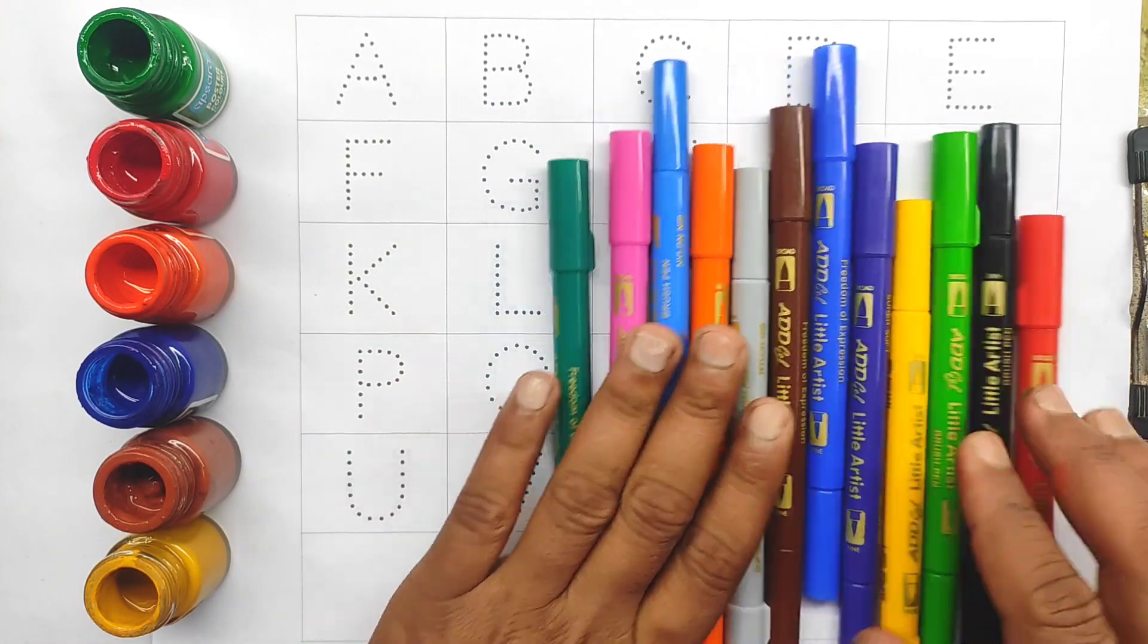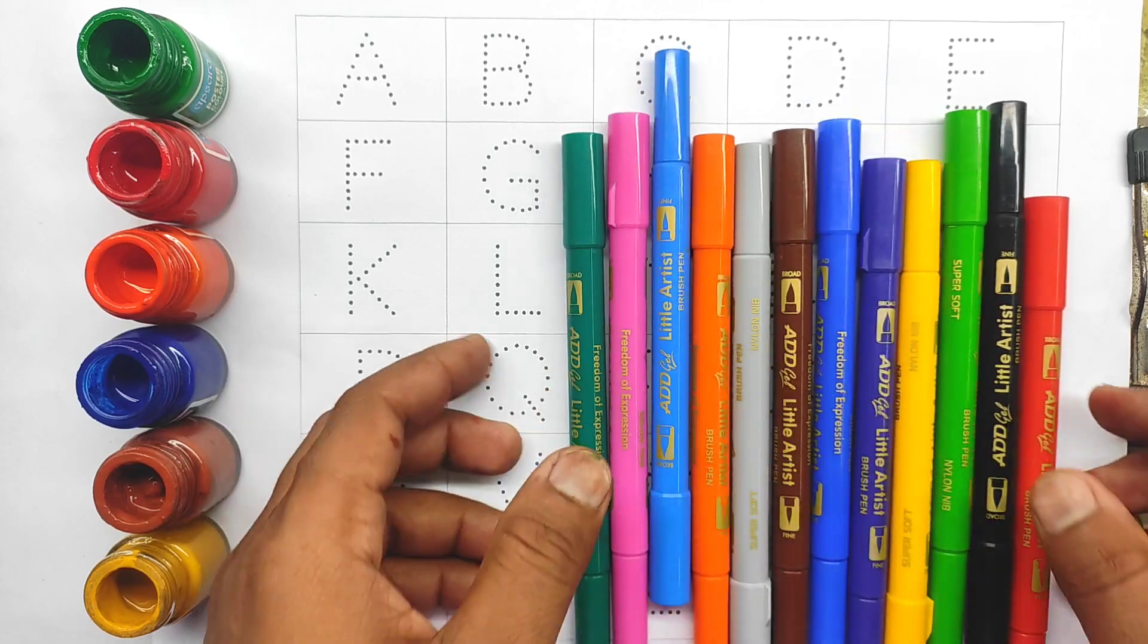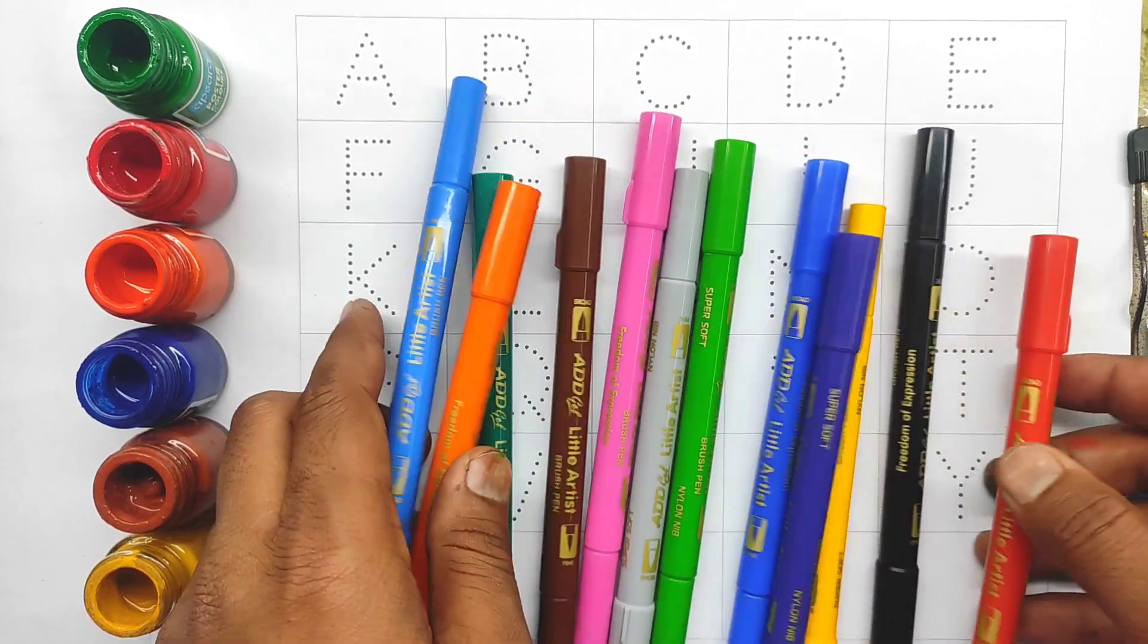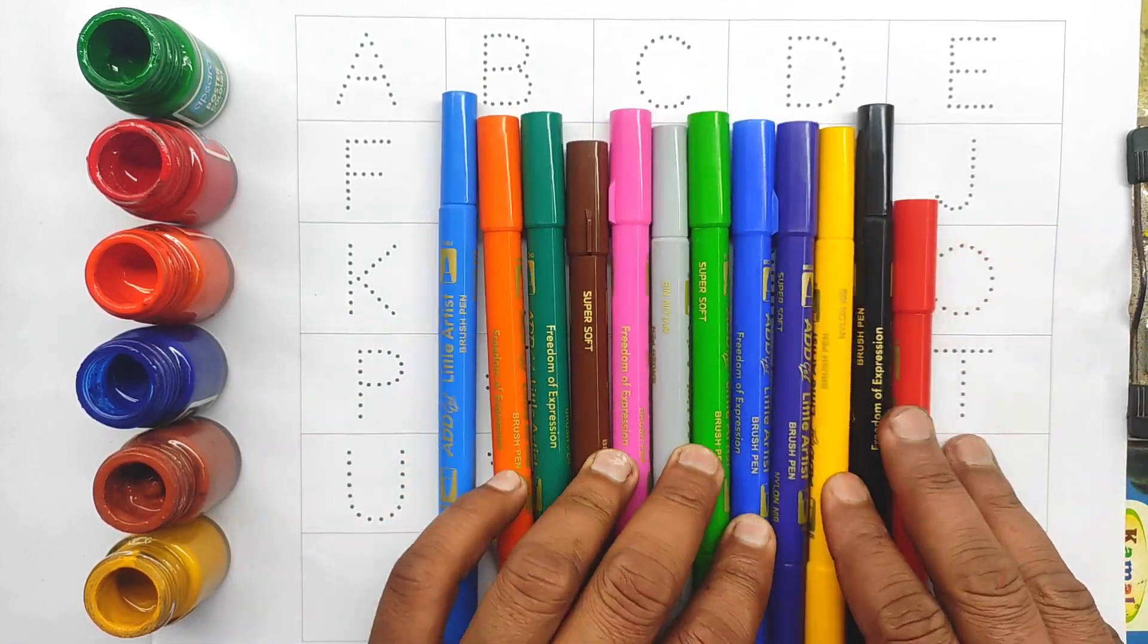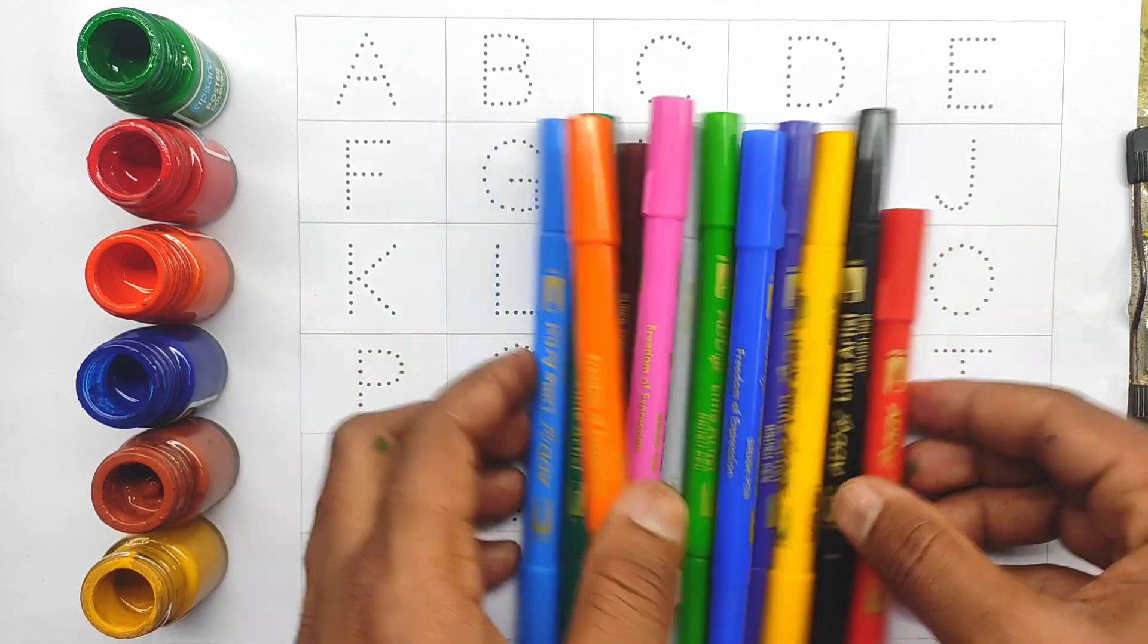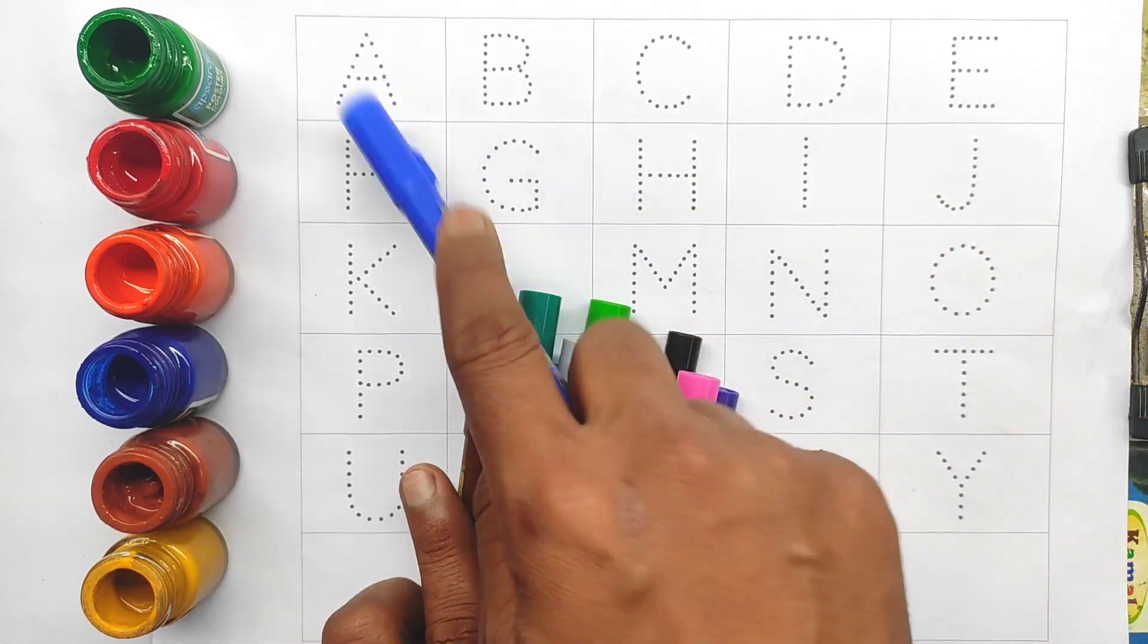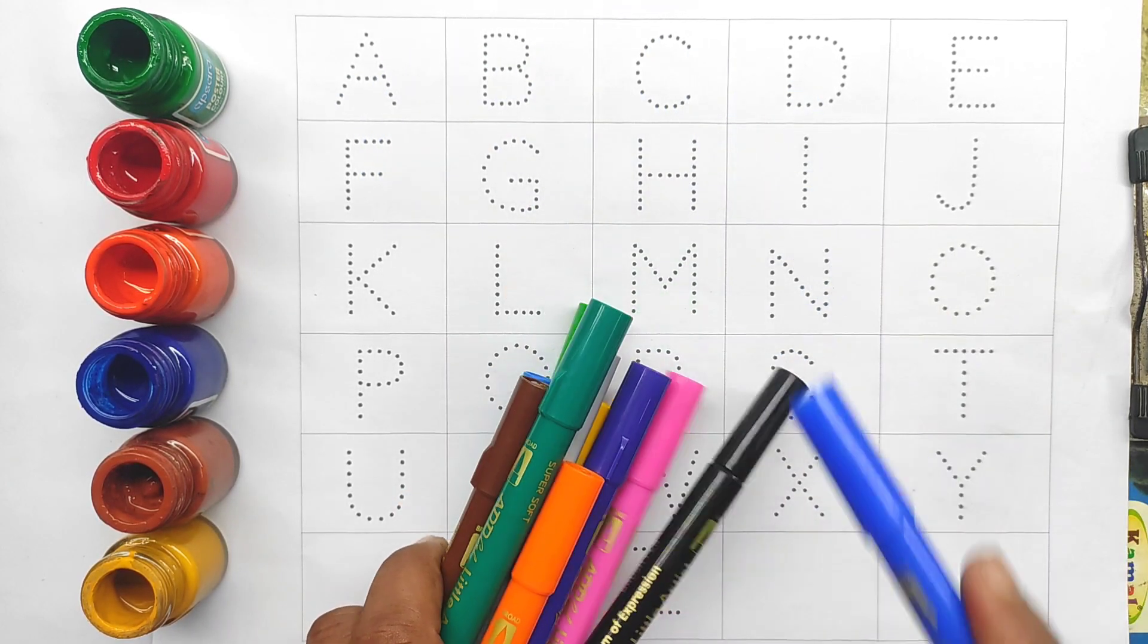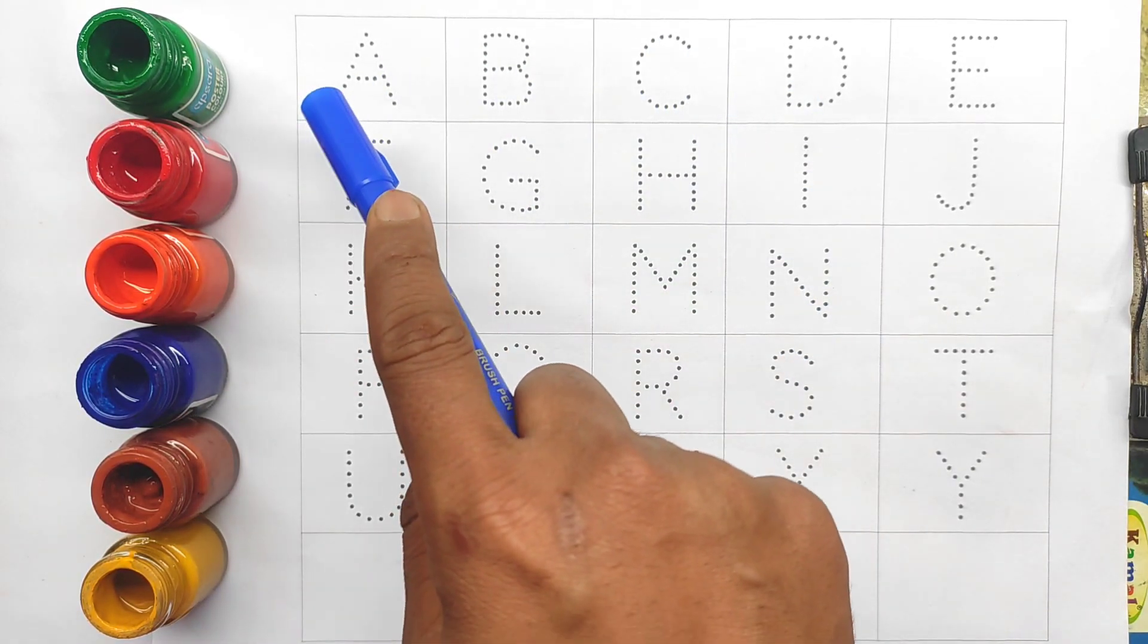Colors name. Welcome to Kids, our new video learning to English alphabet A B C, A B C to Z.